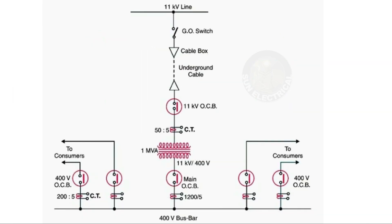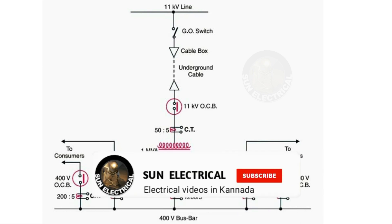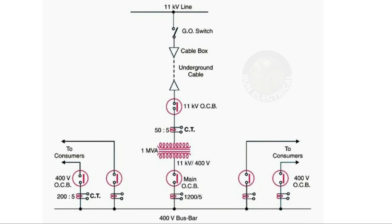First of all, for the 11kV to 440 voltage 3-phase conversion single line diagram, our power supply is 11kV. At 11kV we have a double power structure with a transformer. We have multiple transformers here — at 11kV we have a 3-phase transformer.